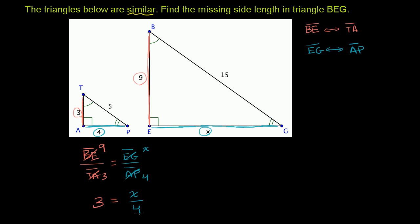And to solve this for x, you just have to multiply both sides by 4. These 4's cancel out, this becomes 12. So x must be equal to 12, which is the missing length on this triangle.